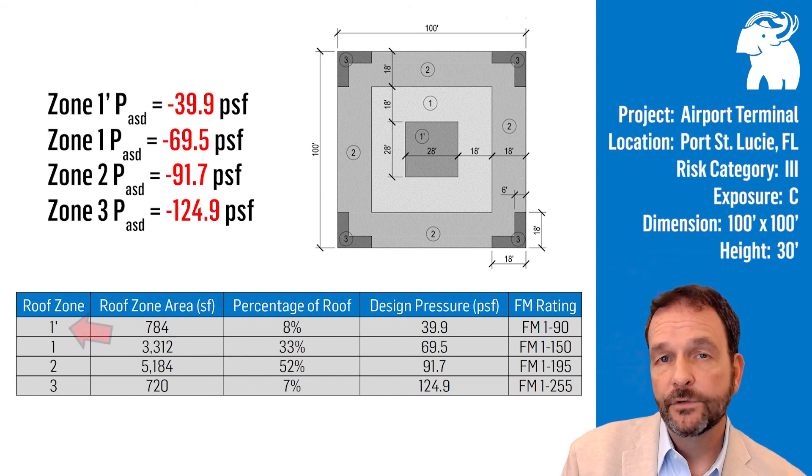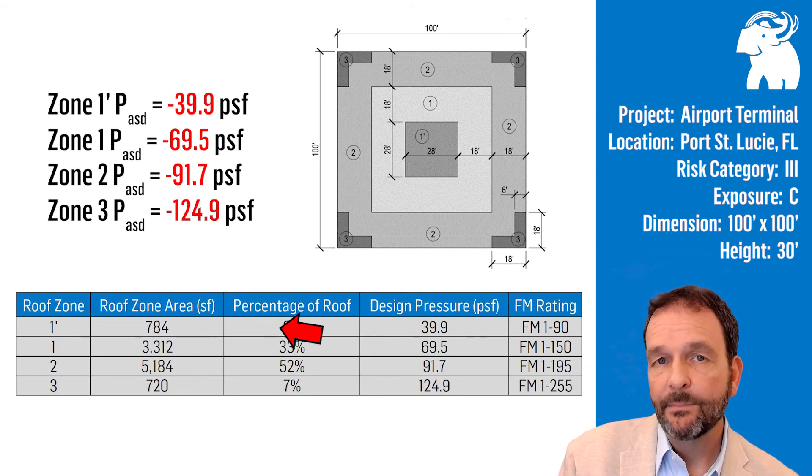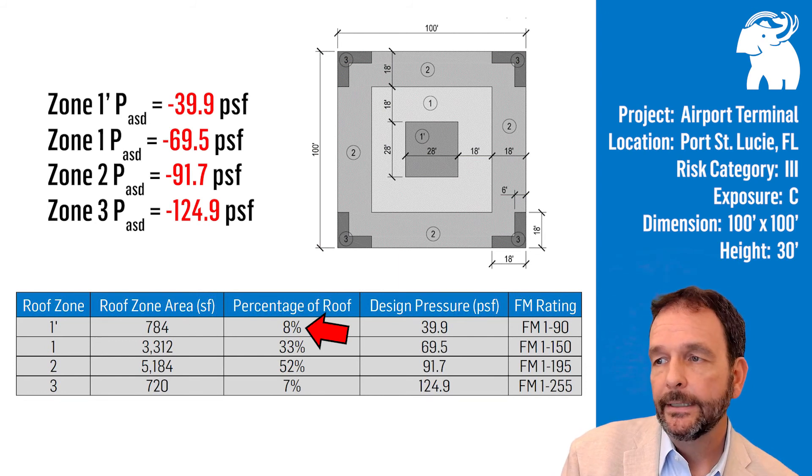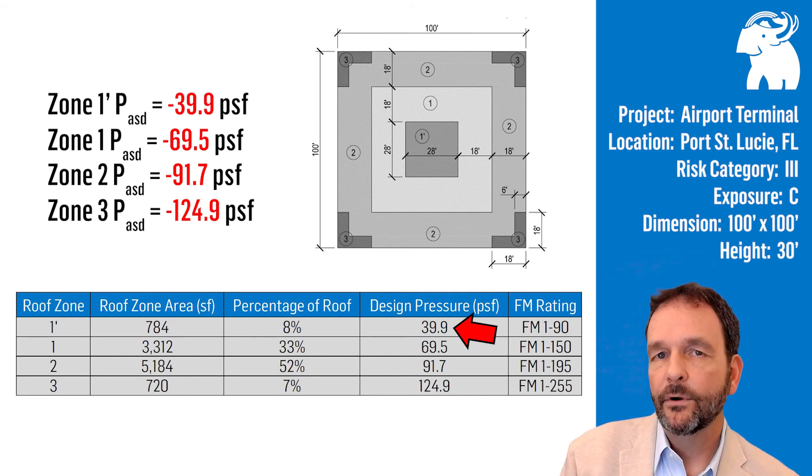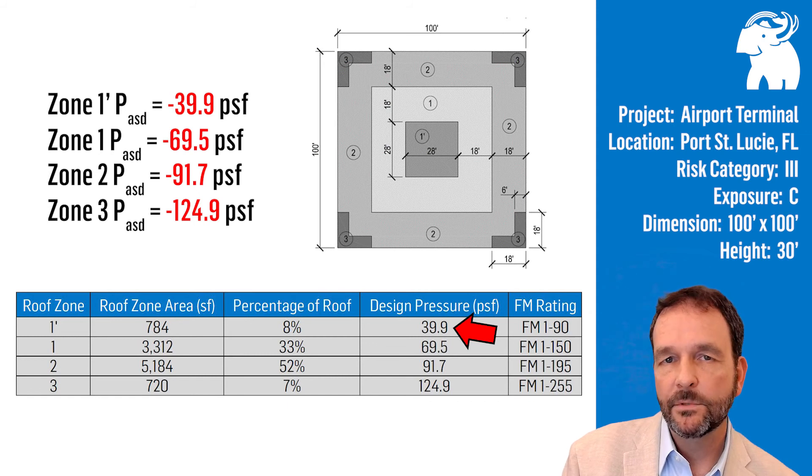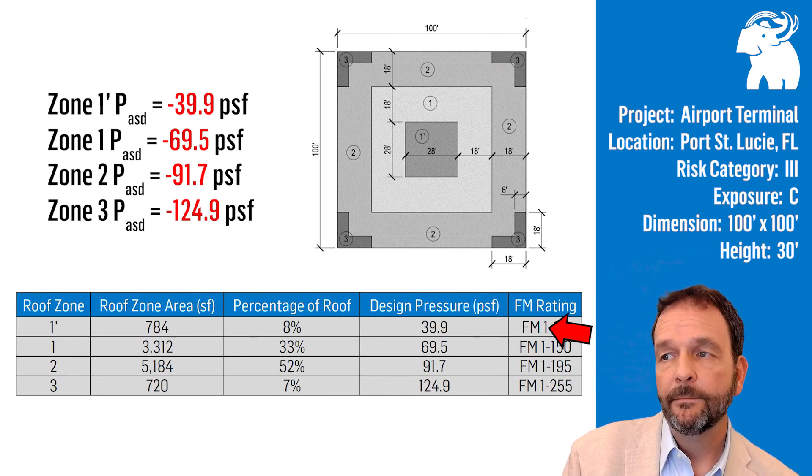For roof zone 1 prime, the size of this area is relatively small. It only represents about 8% of our total roof area. The design pressure would be 39.9 PSF, so we would have to search for a roof that would withstand 39.9 PSF, the maximum design pressure, or an FM rating of FM 1-90.